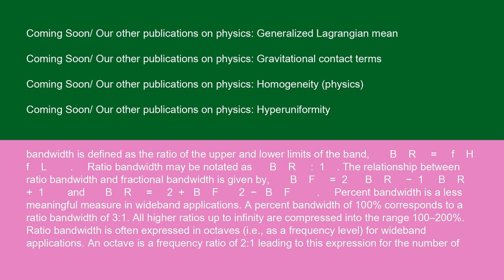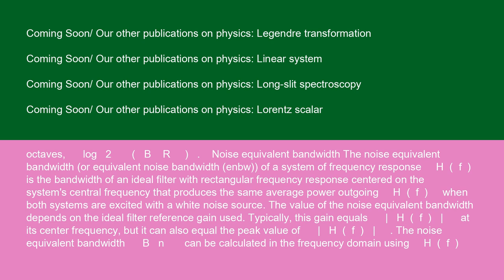All higher ratios up to infinity are compressed into the range 100 to 200%. Ratio bandwidth is often expressed in octaves, i.e. as a frequency level for wideband applications. An octave is a frequency ratio of 2 to 1 leading to this expression for the number of octaves, log base 2 of BR.